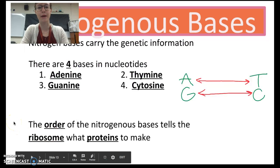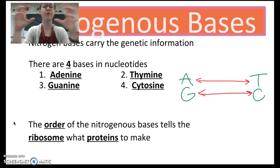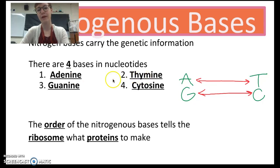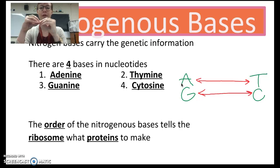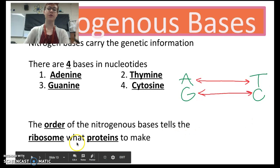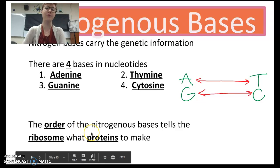Next we're talking about nitrogenous bases, also called nitrogen bases. These are the parts that are really important — they actually carry the genetic information. There are four types of nitrogenous bases with these names: adenine, thymine, guanine, and cytosine. We always have adenine partnered with thymine, and guanine partnered with cytosine. The order of these nitrogenous bases — like adenine, thymine, and guanine — is going to tell the ribosome what proteins to make.